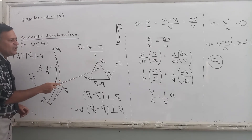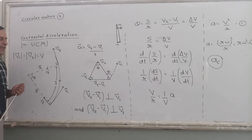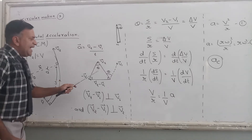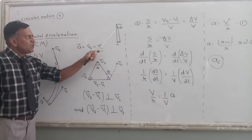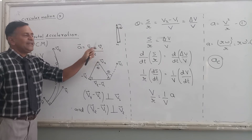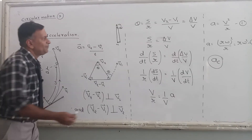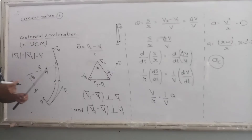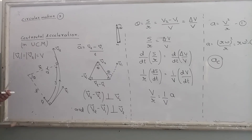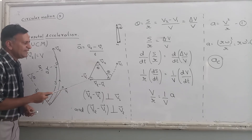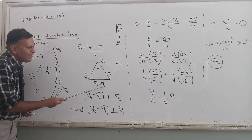As I said, theta is actually very small. If I draw the diagram with theta very small, this is v2 and this is minus v1, and this is theta. Now if theta is very small, this angle and this angle are both nearly equal to 90 degrees. I have transferred that concept to this diagram — this is also 90 degrees and this is also 90 degrees.